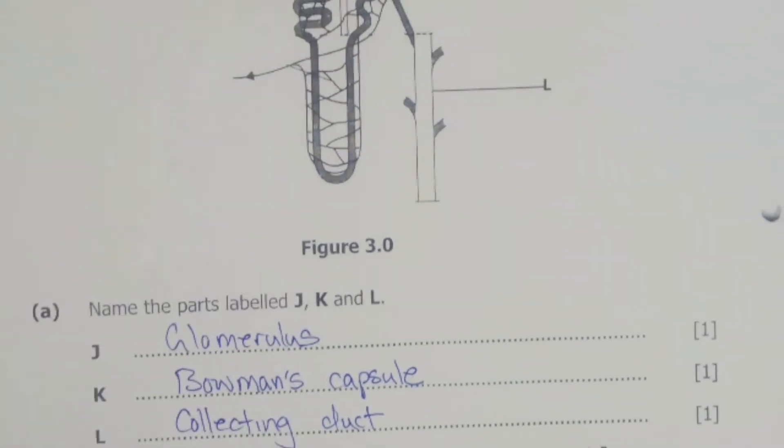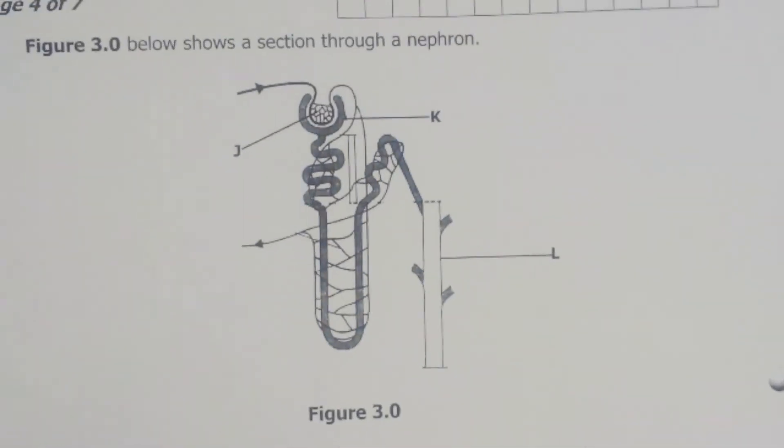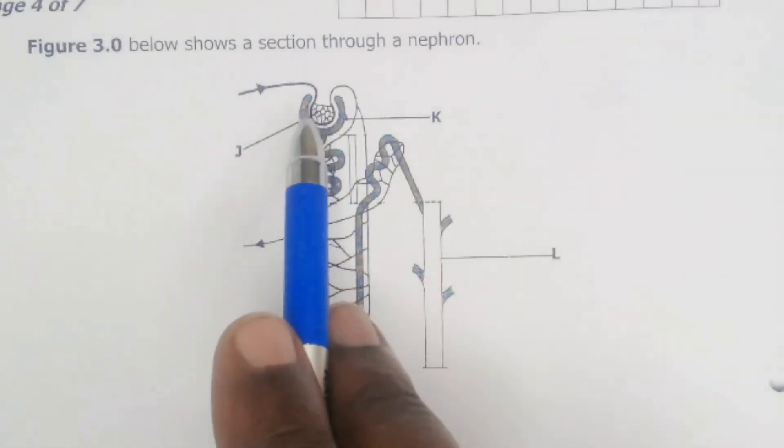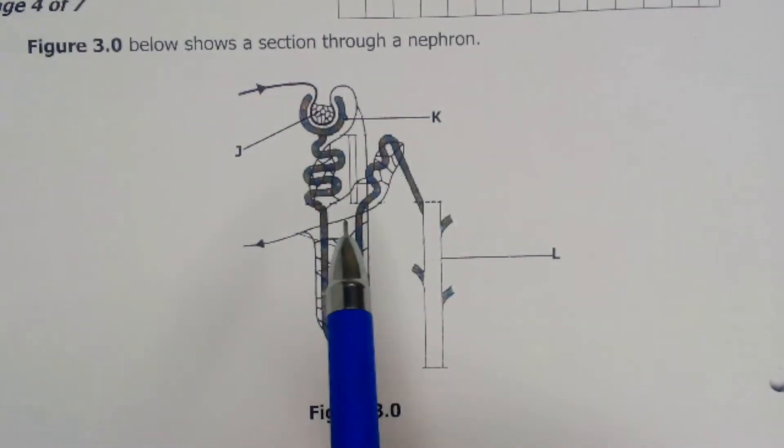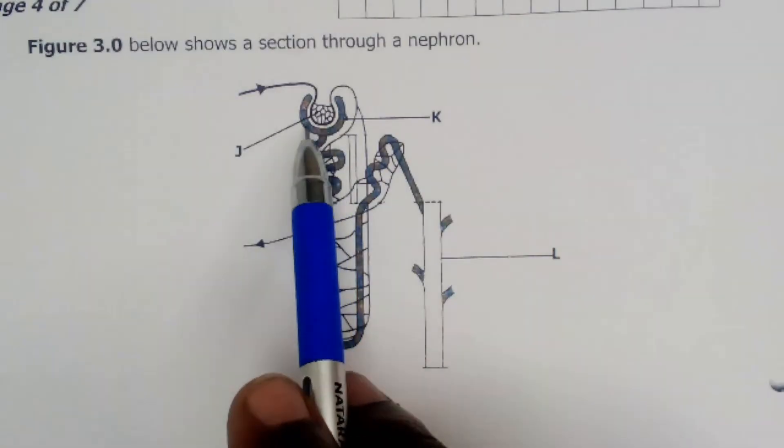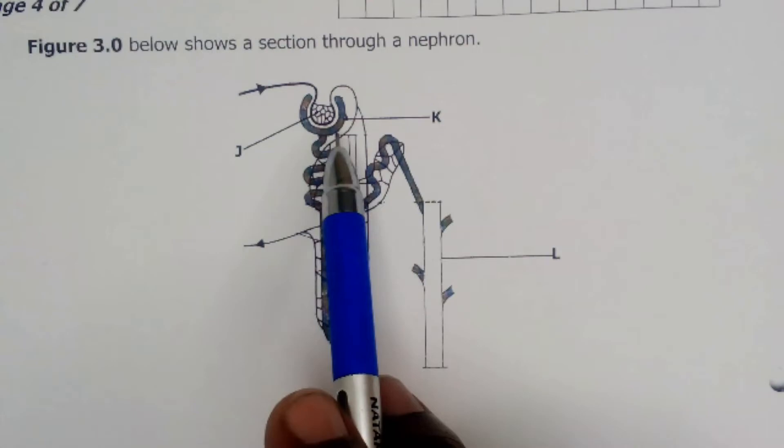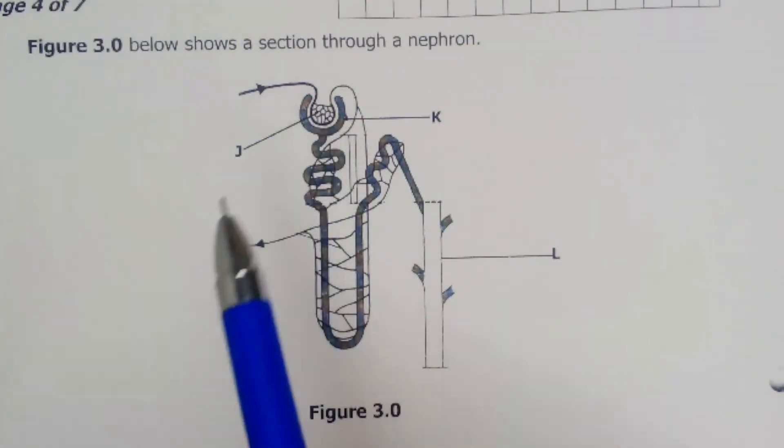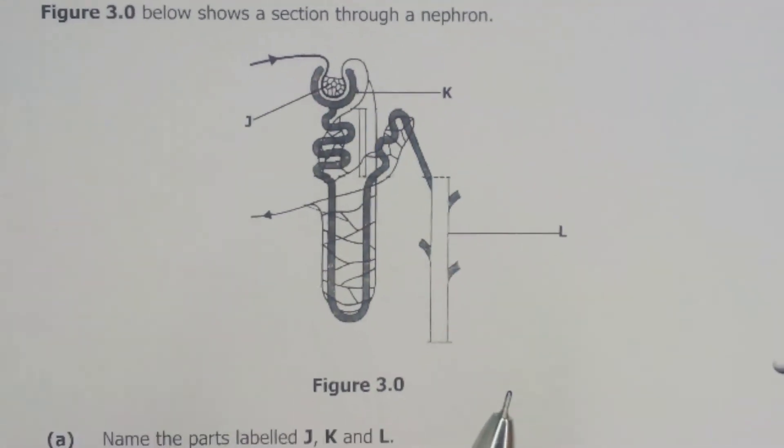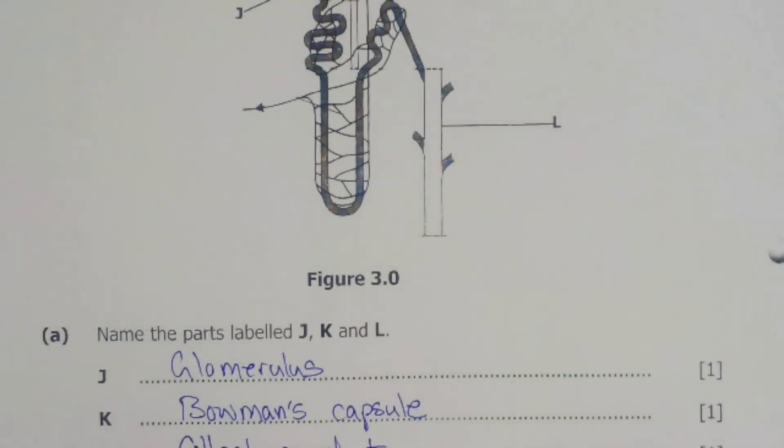So here, part K, we have that as the blood passes through, the large parts of blood won't be filtered. So we are only going to have the urea, mineral salts, and excess water being filtered. But inside here we are going to have the red blood cells, white blood cells, all the plasma proteins, as well as platelets not being filtered during the process of ultrafiltration.